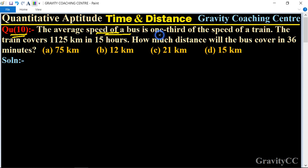In this question, the bus average speed is one-third of the train. The train covers 1125 kilometers distance in 15 hours, so how much distance will the bus cover in 36 minutes?